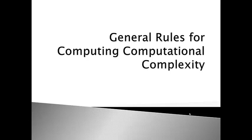In my last video I gave you an introduction to computational complexity. We talked about how computational complexity is a way to express the running time of an algorithm — specifically what the running time looks like as our sample size becomes very large. This helps decide whether an algorithm is useful when processing a lot of data, and allows us to compare algorithms that do the same task. In this video I'm going to talk about the general rules for computing computational complexity — or you could say I'm going to give you an algorithm for computing computational complexity.